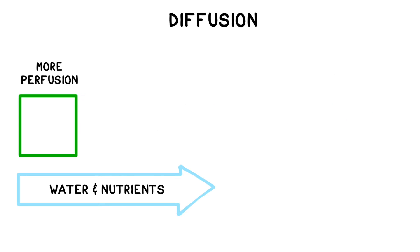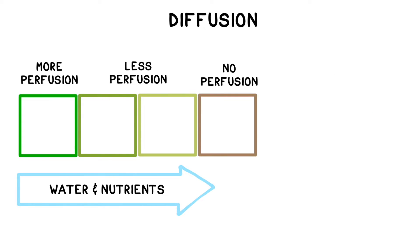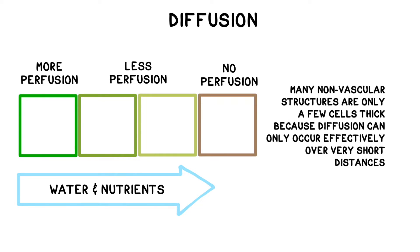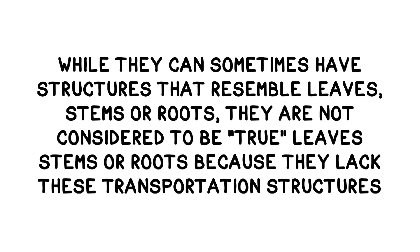Many of these structures are only a few cells thick because diffusion can only occur effectively over very short distances. While they can sometimes have structures that somewhat resemble leaves, stems, or roots, they are not considered to be true leaves, stems, or roots because they lack these crucial transportation structures.